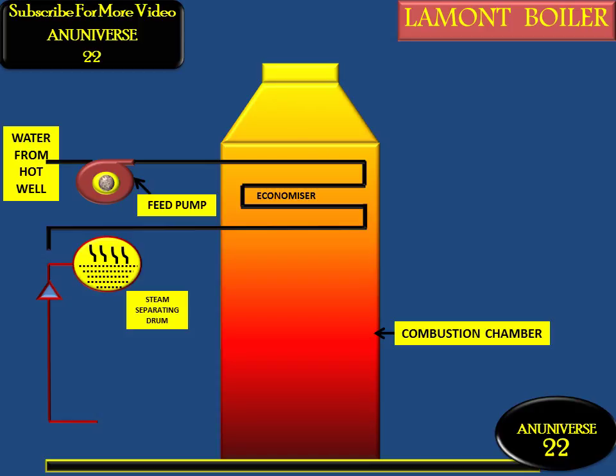The economizer increases the boiler efficiency. This is the steam separating drum. Water comes from the economizer into the steam separating drum, where there is a mixture of steam and water. Water then goes out to the circulating pump, which is a centrifugal pump. Water is circulated with the help of this centrifugal pump, generating forced convection inside the boiler.